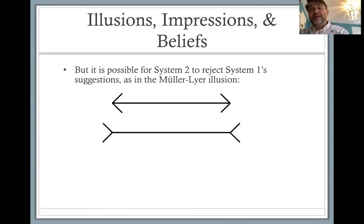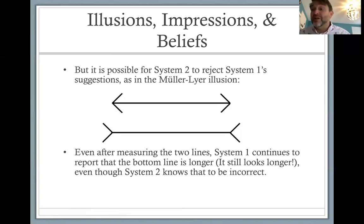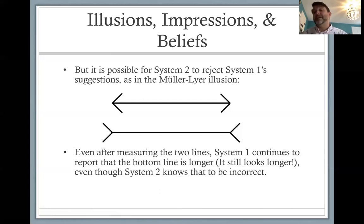You can reject this belief — you can measure the two lines and see they're exactly the same size. So you no longer believe the bottom line is longer. But even knowing that, even having measured them, system one will continue to report that the bottom line is longer. The bottom line still looks longer, even though system two knows that to be incorrect. System one is impervious to suggestions from system two, at least in some cases.